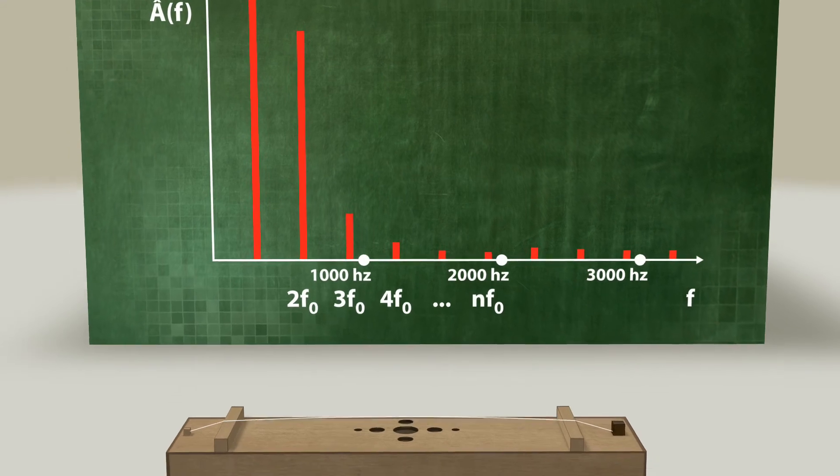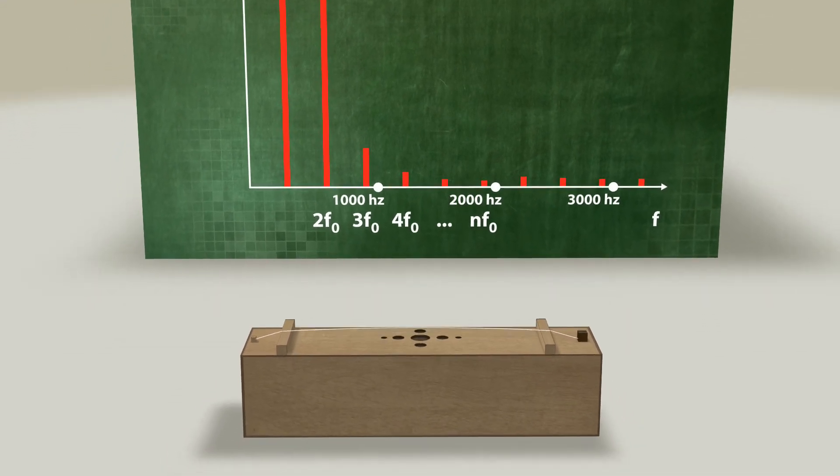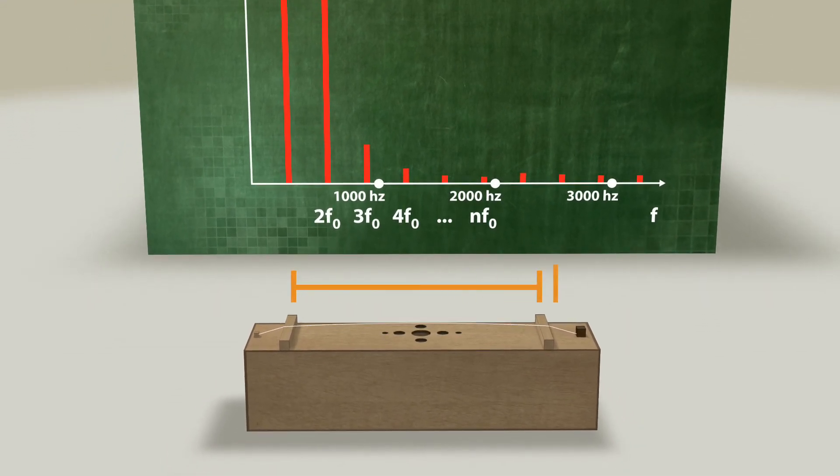Is it possible to infer the characteristics of the oscillating string, such as its length, based on this spectrum?